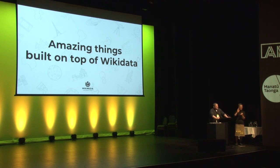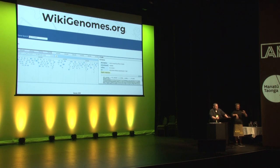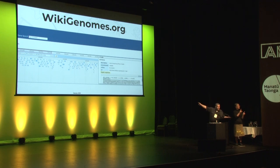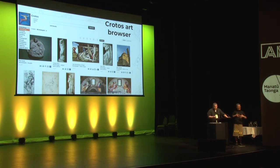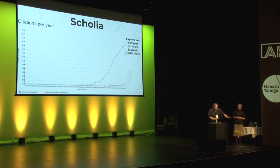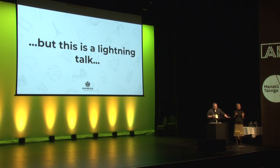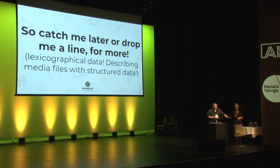There are amazing things built on top of Wikidata. How about the site Wikigenomes for exploring genome data — open data chlamydia right down to the actual genetic code. How about this art browser, entirely built over Wikidata, allowing us to query for Michelangelo and further filter by medium, by date, etc. How about comparing the output of the University of Auckland with Victoria University? I can do that with Wikidata — this is a query. I'm just getting started, but this is a lightning talk, so catch me later or drop me a line for more.